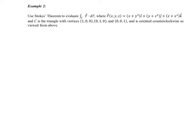Our formula for Stokes' Theorem is that we take the line integral of this curve over the vector field, and we're going to convert it to a double surface integral with the integrand being the curl of F dotted with dS. What we're going to do is compute the curl of F first, and then come up with the equation for our surface, because we need that for S.